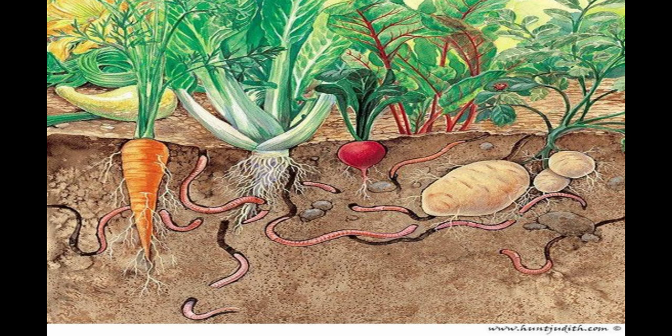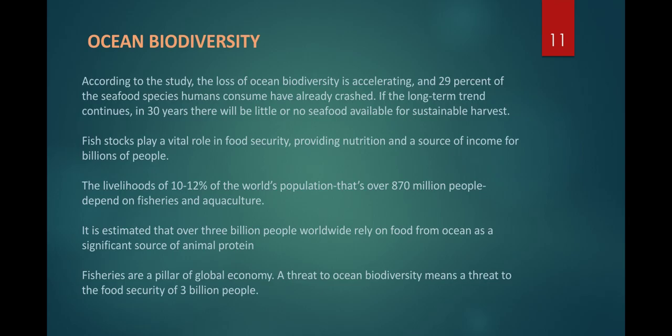Soil biodiversity brings nutrient recycling such as the nitrogen cycle, carbon cycle, phosphorus cycle, and sulfur cycle. Soil biodiversity is very important, and we are actually destroying it through the use of insecticides and pesticides, which is very harmful to soil biodiversity.